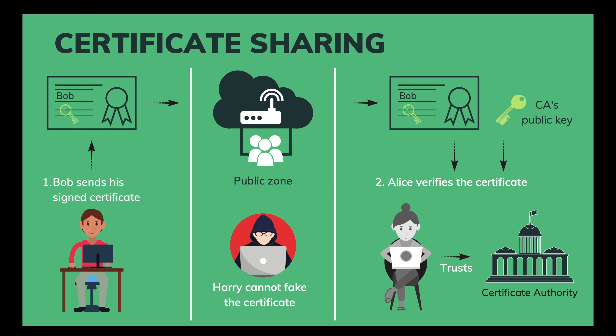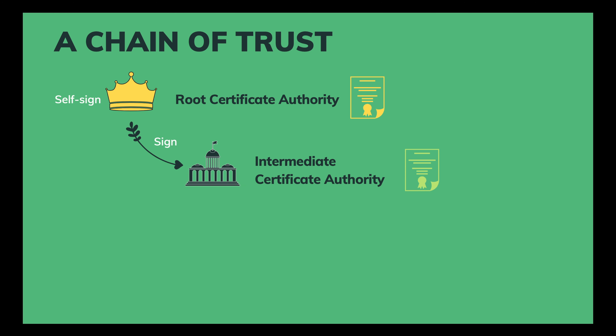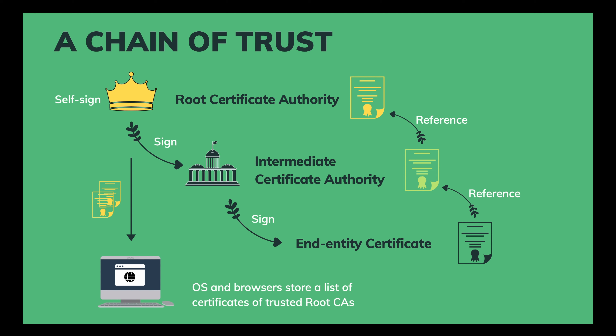Note that this only works because we all trust the certificate authority. If the CA were not trustworthy — for example, if they gave Harry their private key — we would be in serious trouble. In reality, there's a chain of certificate authorities, where at the top level is a root certificate authority who signs their own certificate and also signs the certificates of their subordinate intermediate certificate authorities. These intermediate authorities can sign certificates of other intermediate authorities, or they can sign end-entity or leaf certificates. Each certificate references back to the certificate of the higher-level authority, up to the root. Your operating systems and browsers store a list of trusted root certificate authority certificates, so they can easily verify the authenticity of all certificates.